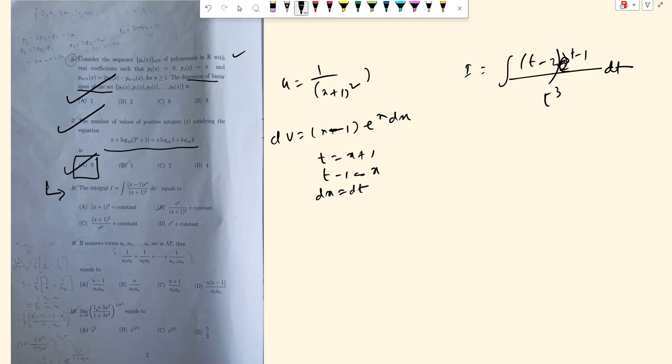Simplifying this, e to the power (t minus 1) is e to the power t over e. So the integration becomes i equals 1 over e times the integral of (t minus 2) e to the power t over t cubed dt.